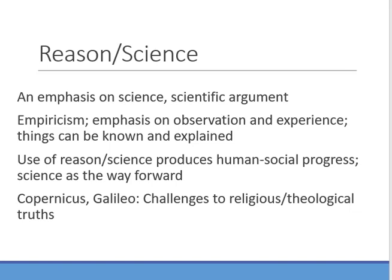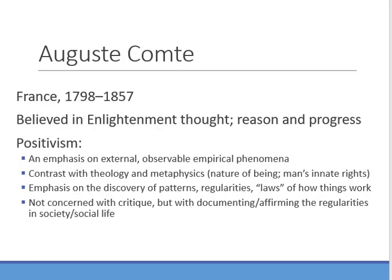The modern world, or the world in which sociology emerged, focused on reason and science, with an emphasis on empiricism — observation and experience, things that can be known and explained. The use of reason and science produces human social progress, or science as the way forward. We saw especially the example of Galileo and the challenges of religious and theological truths to the emerging empirical science of the pre-modern world.